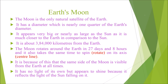Now let's see about Earth's moon. The moon is the only natural satellite of the Earth. It has a diameter nearly one quarter of the Earth's diameter. It appears very big — nearly as large as the sun — because it is much closer to the Earth in comparison to the sun. It is about 384,000 kilometers from the Earth. The moon rotates around the Earth in 27 days and 8 hours, and it also takes the same time to spin on its axis. Because of this, the same side of the moon is always visible from the Earth.